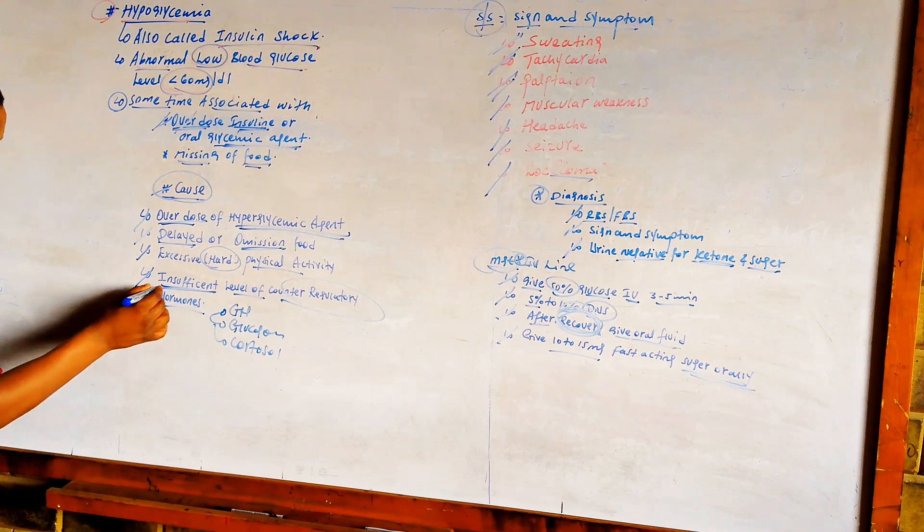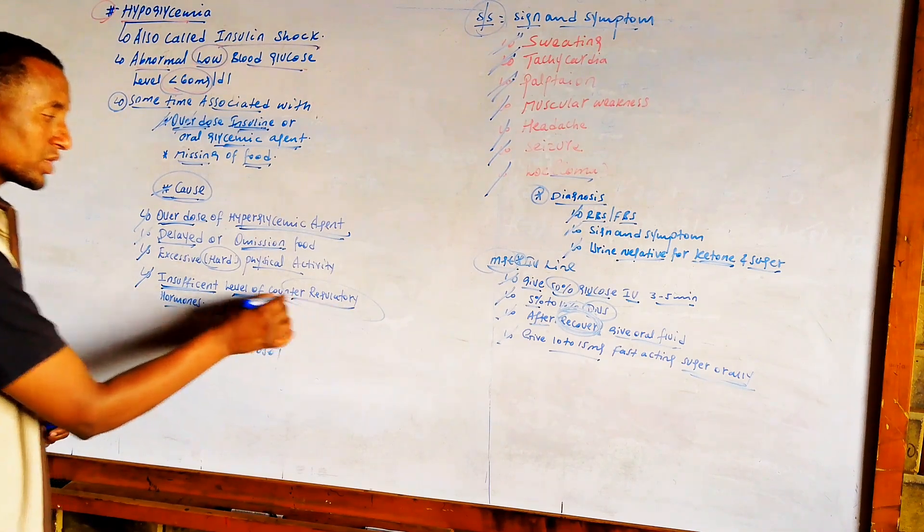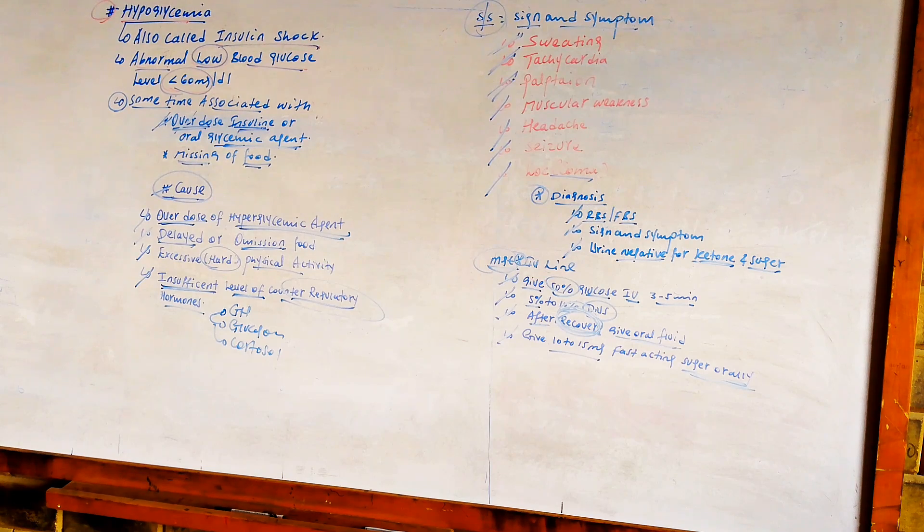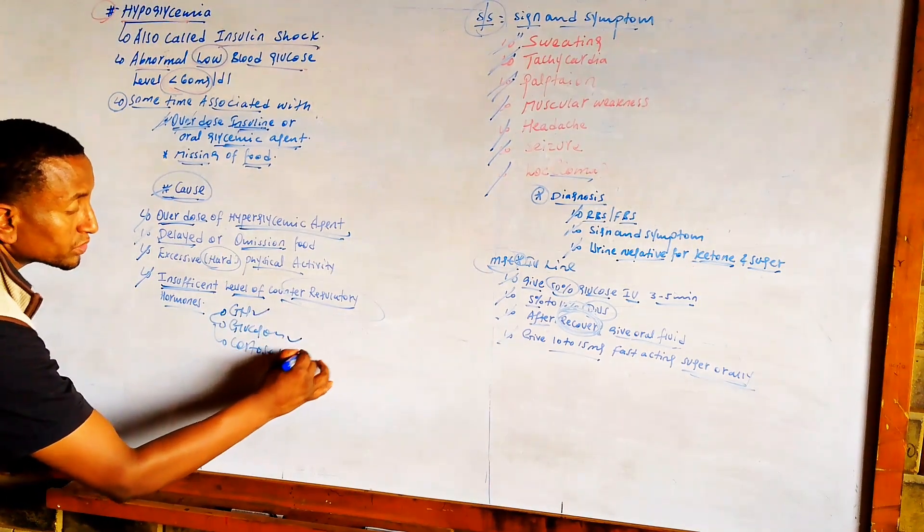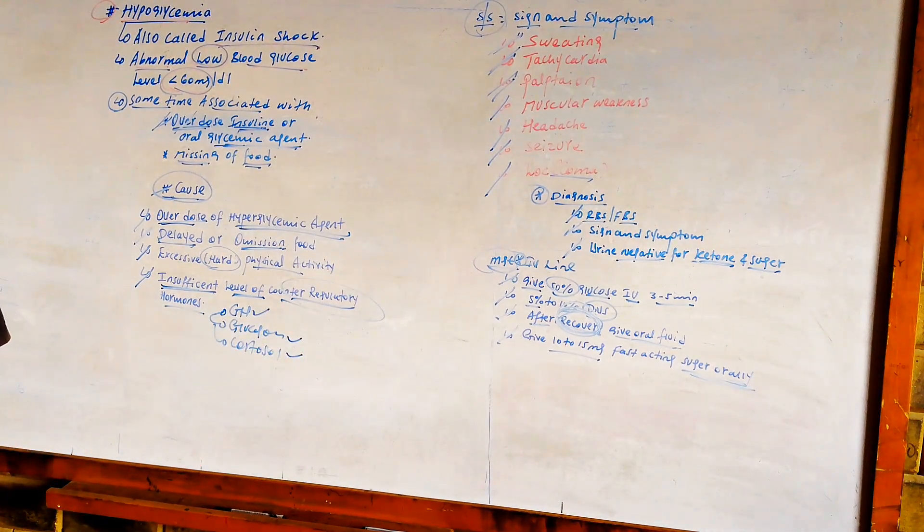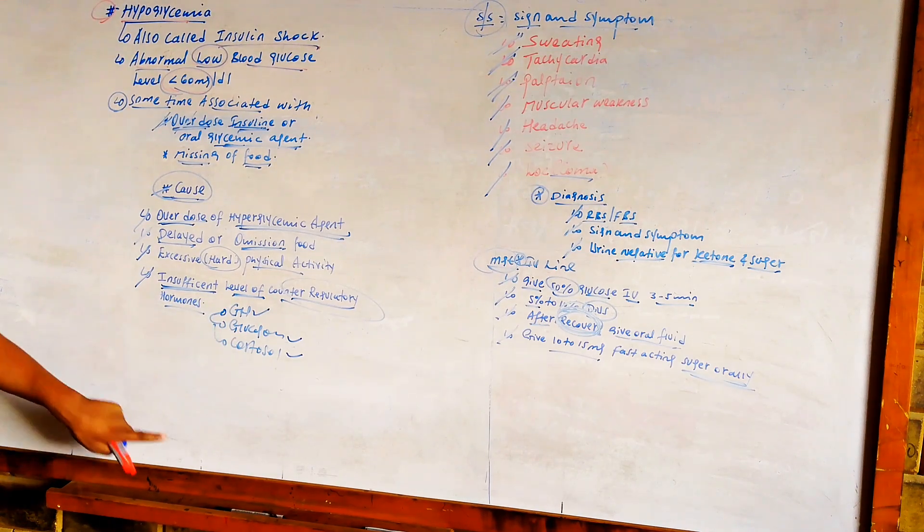Another cause is insufficient levels of counter-regulatory hormones. These counter-regulatory hormones are opposed to insulin. Insulin decreases blood glucose levels, while counter-regulatory hormones like growth hormone, glucagon, and cortisol increase blood glucose levels. When these hormones cannot perform properly, the patient is at risk for developing hypoglycemia.